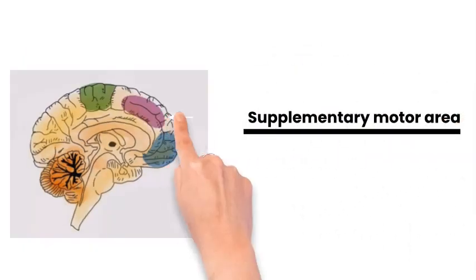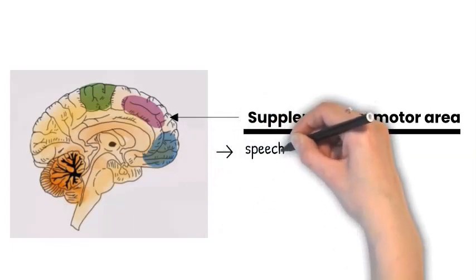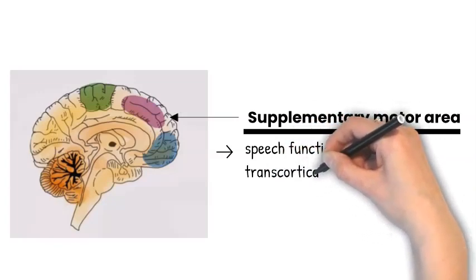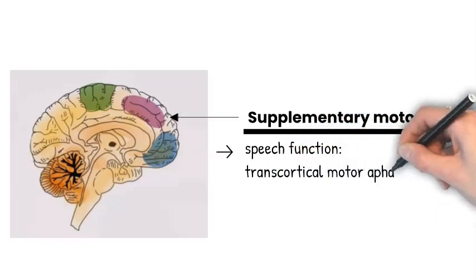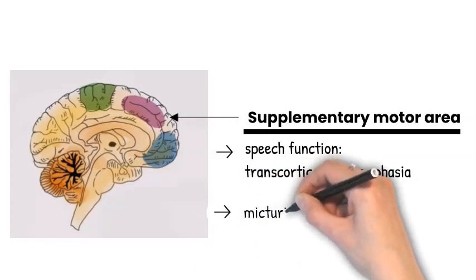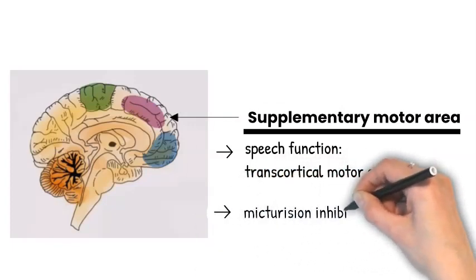The second area is the supplementary motor area which plays an important role in speech. The patient will have transcortical motor aphasia - the patient cannot talk but can still repeat sentences. There is also involvement of the maturation inhibitory area.